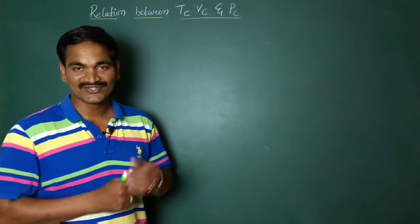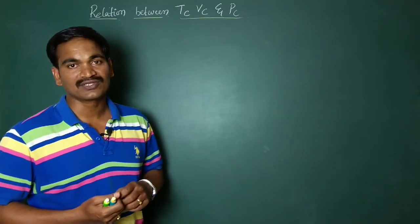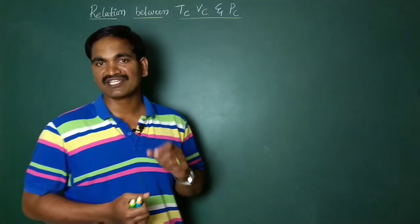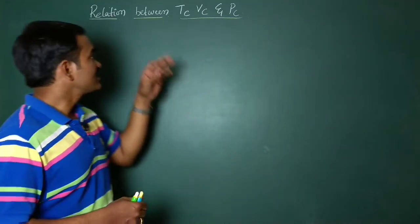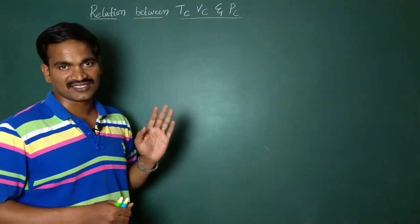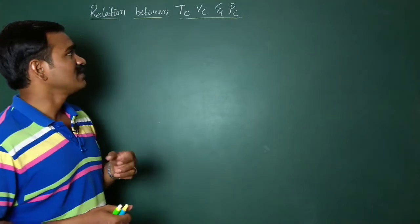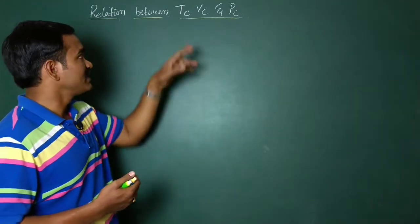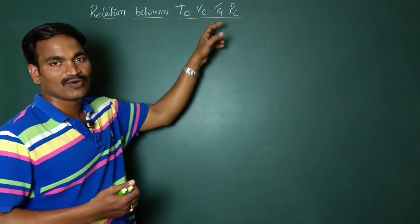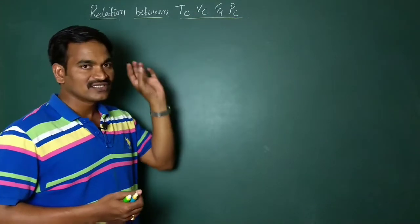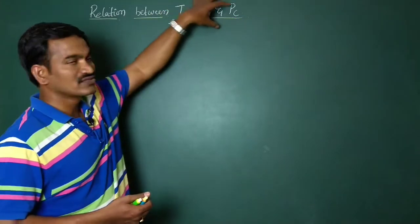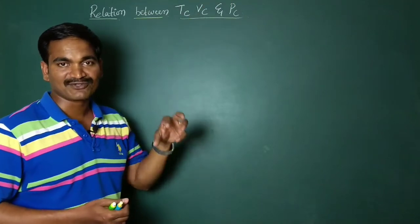Hello students, in today's class we are going to learn about one important topic, a very simple topic, that is relation between critical constants. You all know very well, critical constants means critical temperature, critical volume and critical pressure. There is a relation among these constants, we have to know about that.